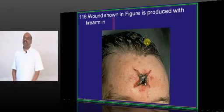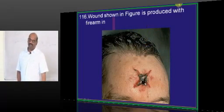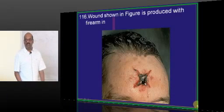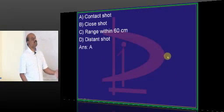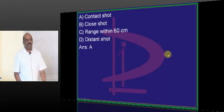What is this wound shown in the figure? It is called a stellate wound, a star-shaped wound. Stellate wound is a classical feature that you see in case of contact shot wound.